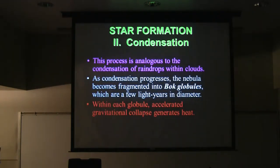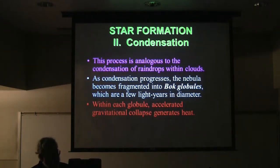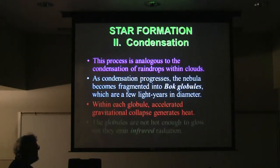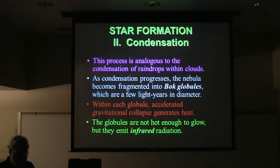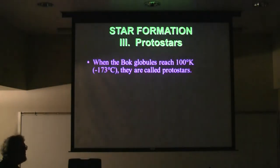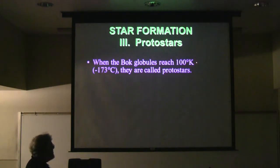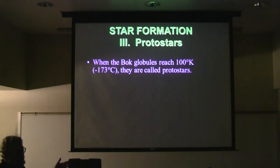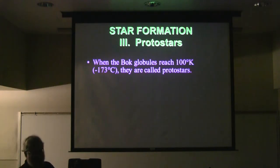As gravitational contraction accelerates, it starts to generate heat. If you've ever pumped up a bicycle tire, you know that when you compress a gas it heats up. As the little particles in the Bok globules get closer together under their own gravity, they start to warm up. At that point they're not hot enough to glow — you don't see them — but they do emit infrared radiation. When they reach about 100 Kelvin — still 173 degrees below the freezing point of water on the Celsius scale — they start to be called protostars.